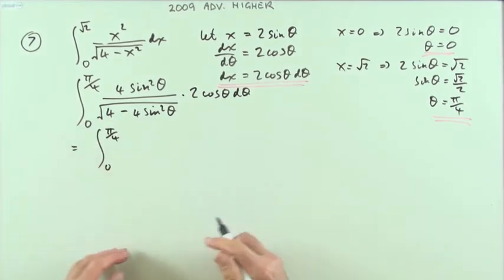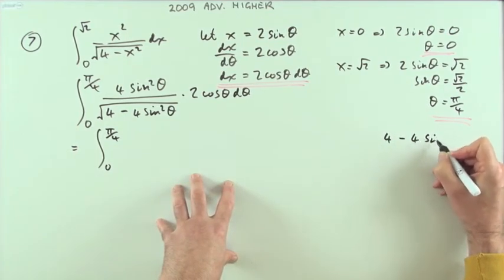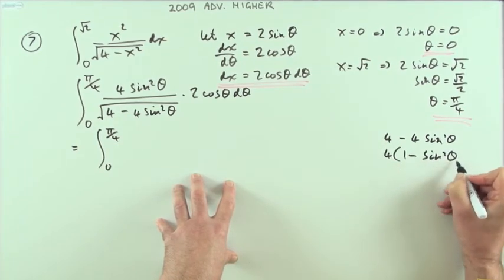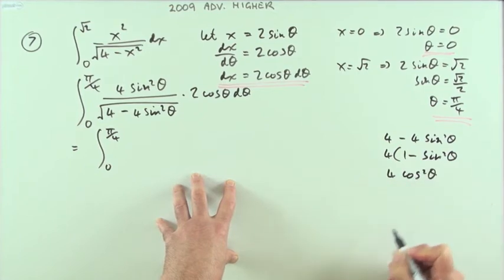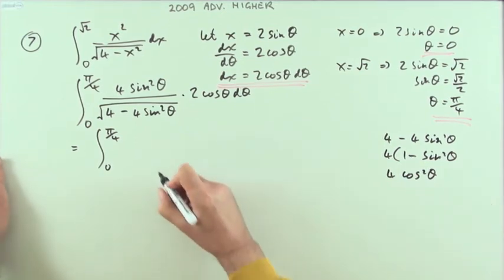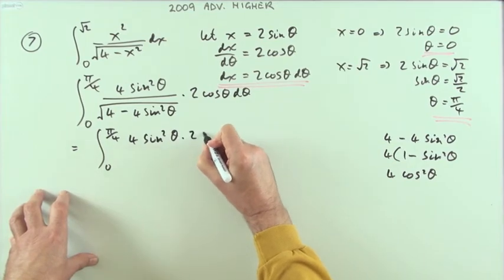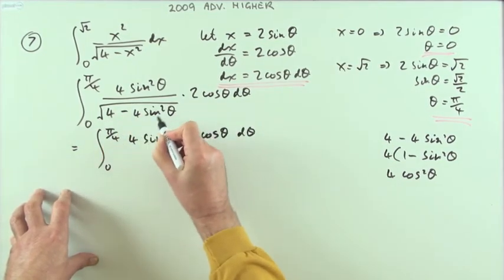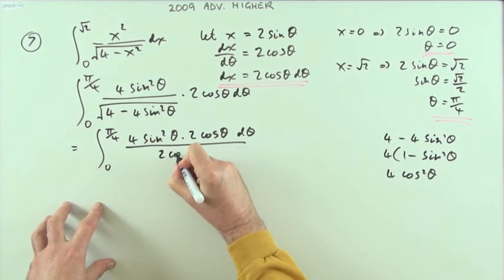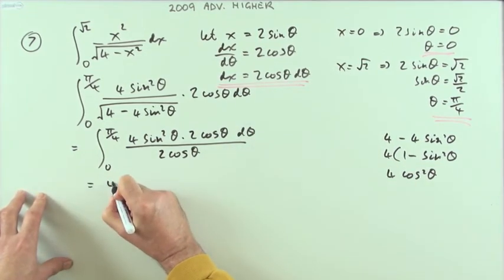Tidying up: four minus four sin squared θ — take the four out, leaving one minus sin squared θ, which becomes four cos squared θ. The square root of that is two cos θ. So I've got four sin squared θ times two cos θ dθ on top, and two cos θ on the bottom. Those parts cancel out.